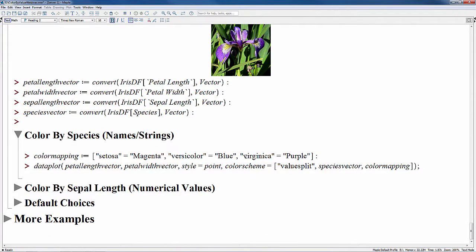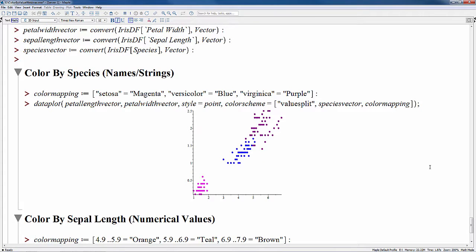In this first example using the iris data, we want to plot the petal length of each iris against the petal width. Then we want to color each of the points according to the species. We start first by defining a mapping. And this is a list of equations matching a species name to a particular color. Now we create our plot. We plot the petal length and petal width using the data plot command. And then we use the color scheme option to do the coloring. So notice that the first argument here is value split, which is the kind of color scheme we're using. The second is the vector we want to color by, the species vector in this case. And the third is the mapping that we just defined.